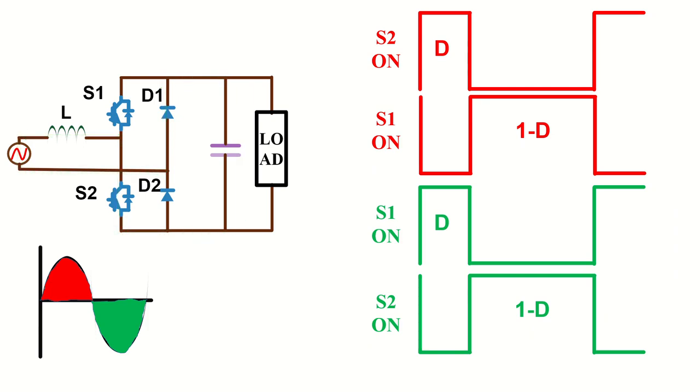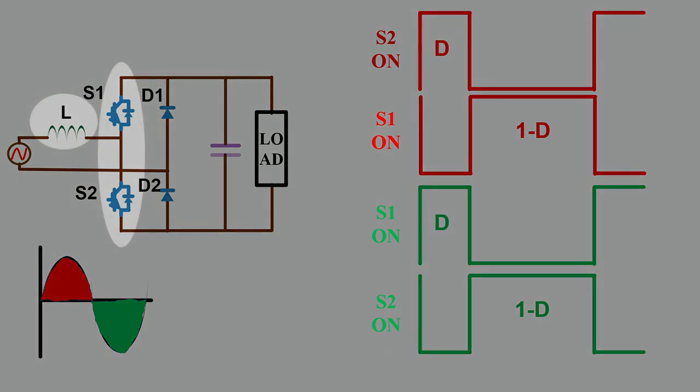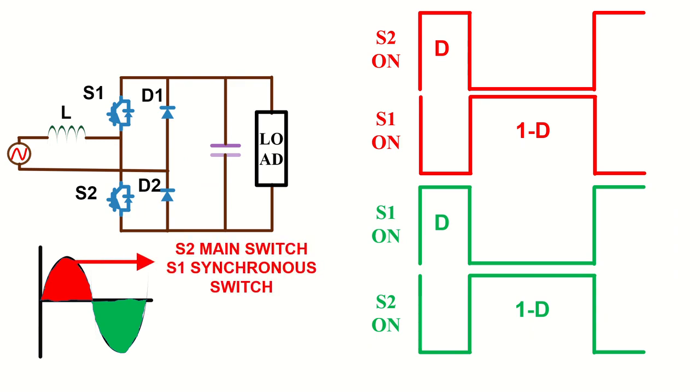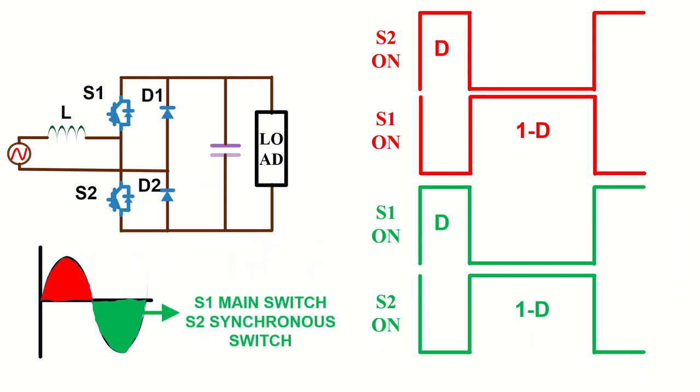So for the complete cycle of operation, the high frequency switches, together with the inductor, create a synchronous mode boost converter. The only difference is that during positive half cycle, switch S2 is the main switch and S1 is the synchronous switch, and during negative half cycle, S1 is the main switch and S2 is the synchronous switch.